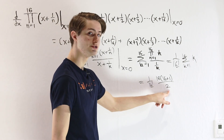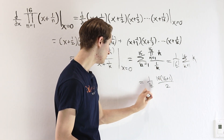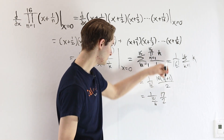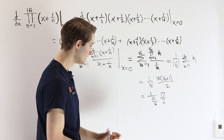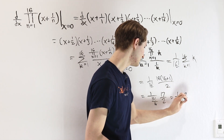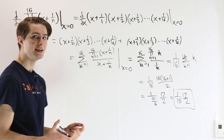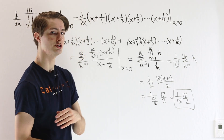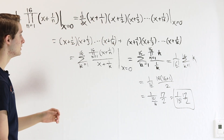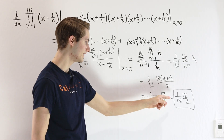The sum of the first 16 integers has a closed form: 16 times 17 over 2. So we get 1 over 16 factorial times 16 times 17 over 2. This simplifies — 16 factorial divided by 16 gives 15 factorial — so our final answer is 17 over 2 times 15 factorial. The solution used the generalized product rule, recognized that each derivative term removes one factor, expressed everything compactly with sigma and pi notation, and then simplified the resulting sum.